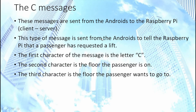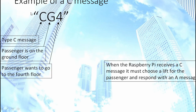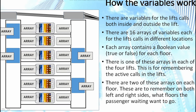The C messages are sent from the Androids to the Raspberry Pi (client to server) to tell the Raspberry Pi a passenger has requested a lift. A C message contains: the letter C, the floor the passenger is on, and the floor they want to go to. Once the Raspberry Pi receives a C message it chooses whether a left or right hand lift is sent and sends an A message back. Since I'm using HTTP rather than TCP, the Raspberry Pi can't simply send a message to the Androids at any time — it can only respond to requests. So there is also a D message, which does nothing except allow the Raspberry Pi to send a message back as a response whenever it wants to.